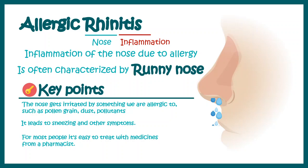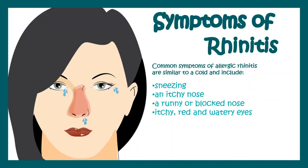Let's talk about the symptoms of allergic rhinitis in a bit more detail. The symptoms include sneezing, itchy nose, runny and blocked nose, itchy and red sensation around the eyes and nose area, cough, and overall an itchy feeling on the roof of the mouth. All of these are very peculiar to allergic rhinitis and are similar to a common cold.